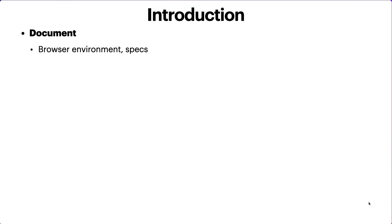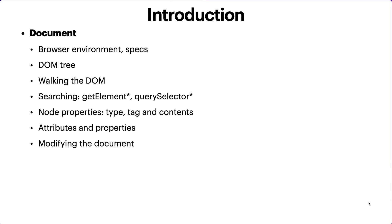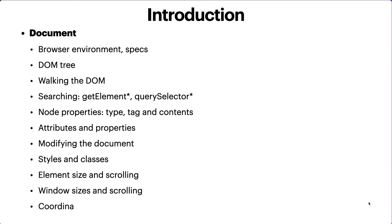Then we'll get into the browser and Document Object Model. We'll cover the browser environment and specification, the DOM tree, what the Document Object Model is, how to walk through the DOM, searching for elements using getElementById and querySelector, node properties like type, tag name, and content, attributes and properties, and modifying or manipulating the document based on your needs.